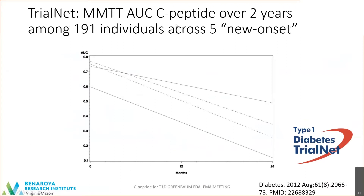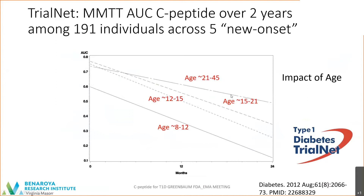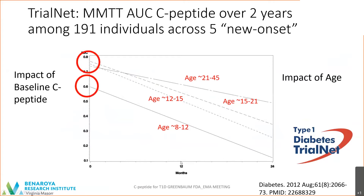This is data from almost 200 people across five new-onset trials. We divided people into quartiles according to their age and then modeled their insulin secretion over two years on the study. You can see the impact of age: adults, that is over age 21 in this figure, had a relatively flat slope, whereas children — the youngest down to age eight — and subsequent data suggests a similar pattern. Older individuals, when modeled, have a very similar slope over time. But another big impact on where people end up after one or two years is really their baseline C-peptide. Older people tend to have a higher level of C-peptide at the time of diagnosis as compared to younger cohorts.